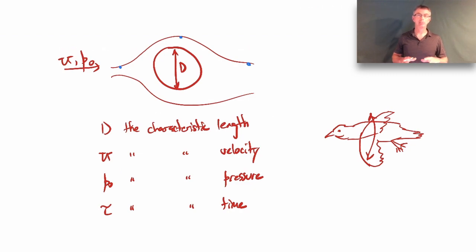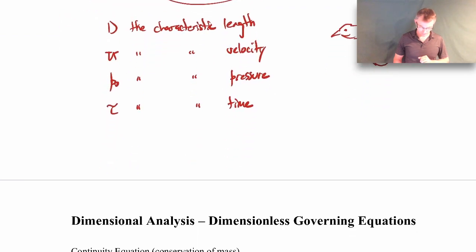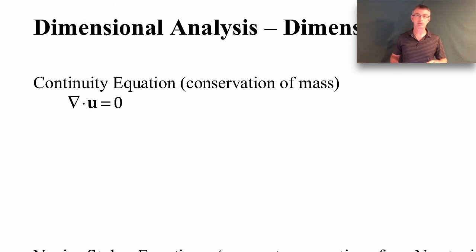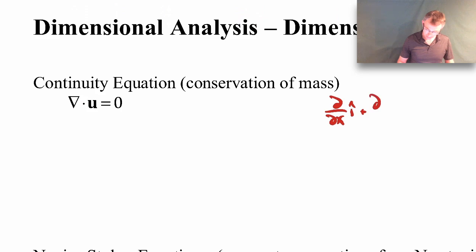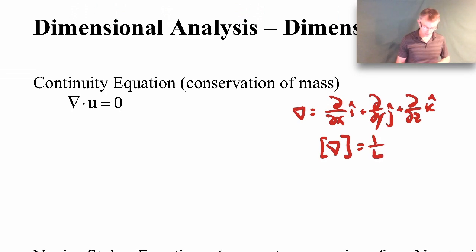Let's start with the continuity equation: del·u equals zero, specifically for an incompressible substance. As it stands, this equation is dimensional. The dimensions of a gradient — d/dx i-hat plus d/dy j-hat plus d/dz k-hat — are like one over length. Velocity has dimensions of length over time. So the continuity equation has dimensions of one over time, and we want to make that dimensionless.